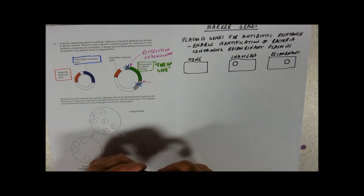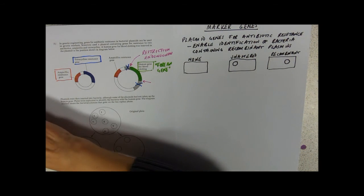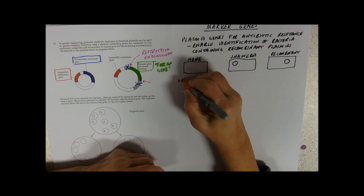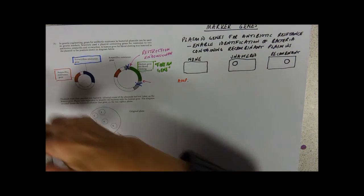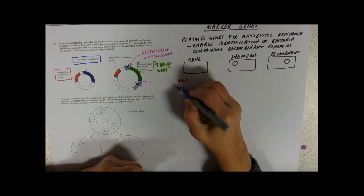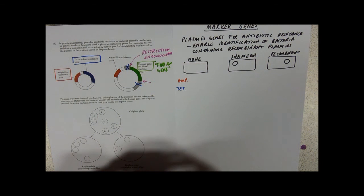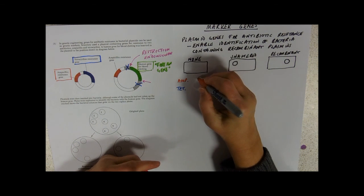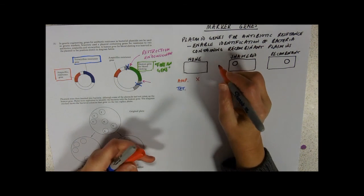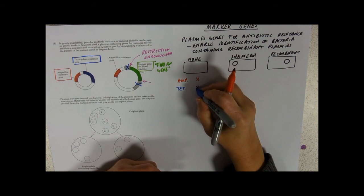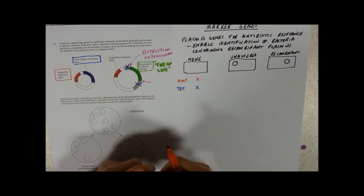So, if we look now at our two antibiotics. So we've got amp - ampicillin - and we've got tet for tetracycline. Obviously, our poor bacteria that didn't bother to take up a plasmid are now regretting it heartily. Because if you grow those bacteria on an ampicillin plate, they die. And if you grow them on a tetracycline plate, they die.